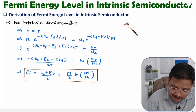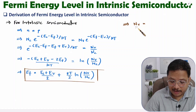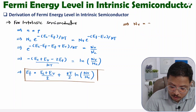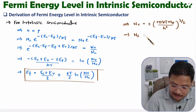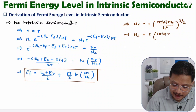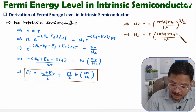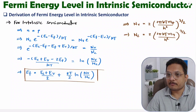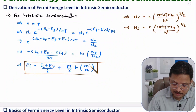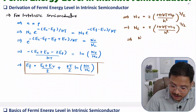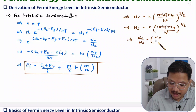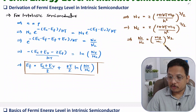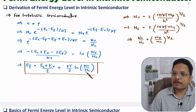Let us place those values here. Nv, for the valence band, is 2 times (2π KT Mp / h²) raised to 3/2, where Mp is the mass of holes. And Nc is 2 times (2π KT Mn / h²) raised to 3/2, where Mn is the mass of electrons. From these two equations, we just need the ratio Nv/Nc. The common term 2π KT/h² cancels, leaving (Mp/Mn) raised to 3/2. We substitute this to get the second form.